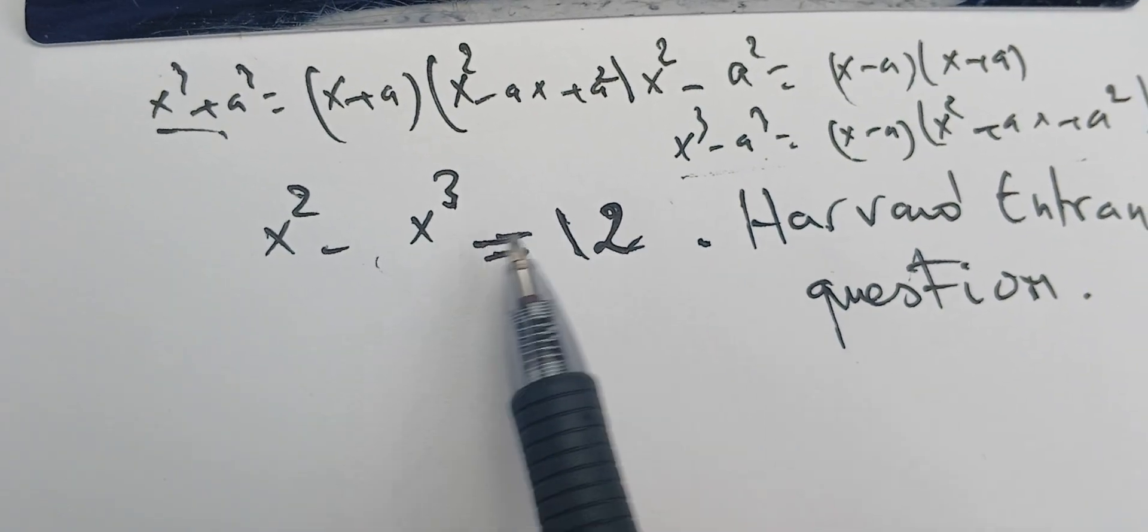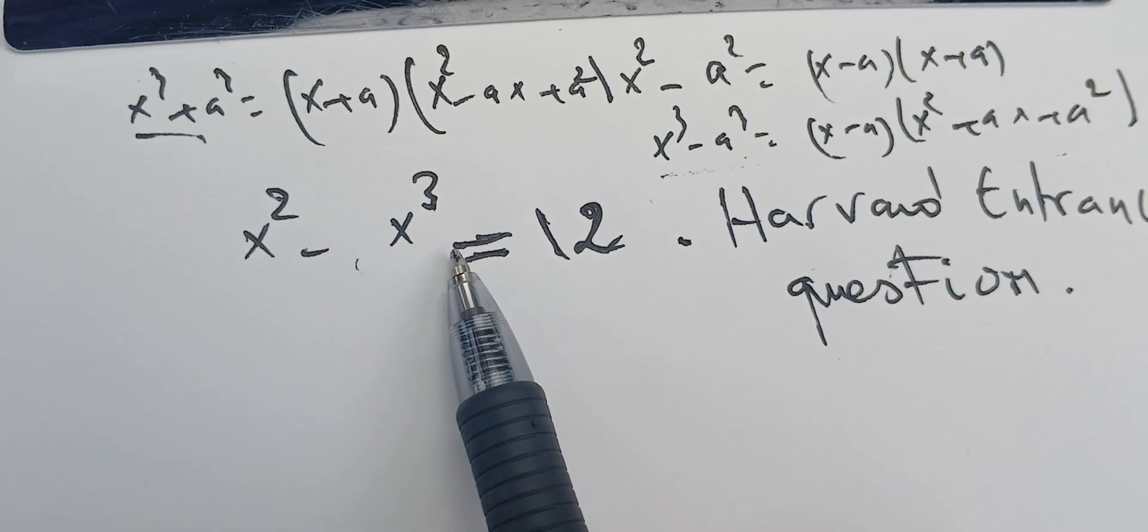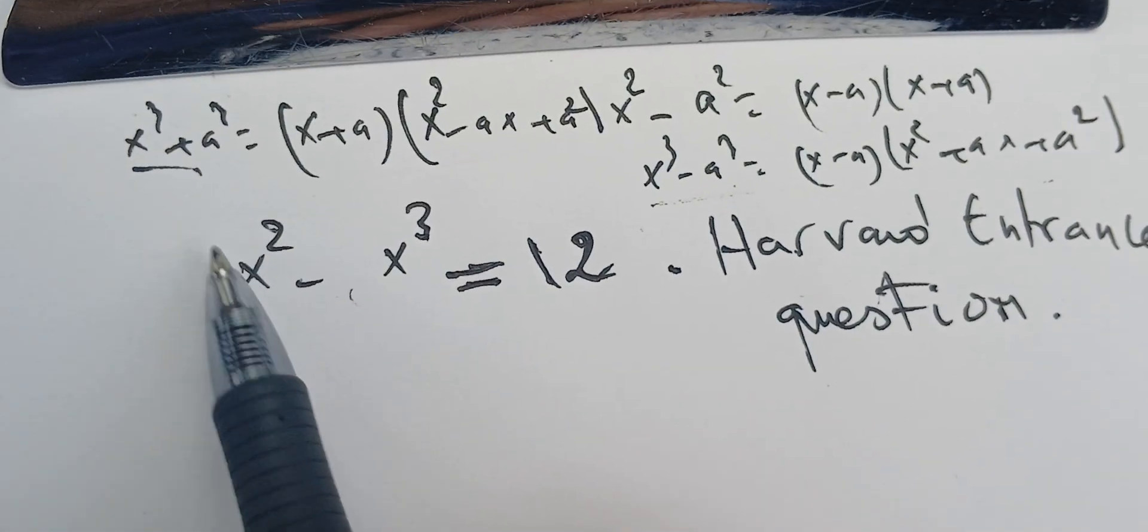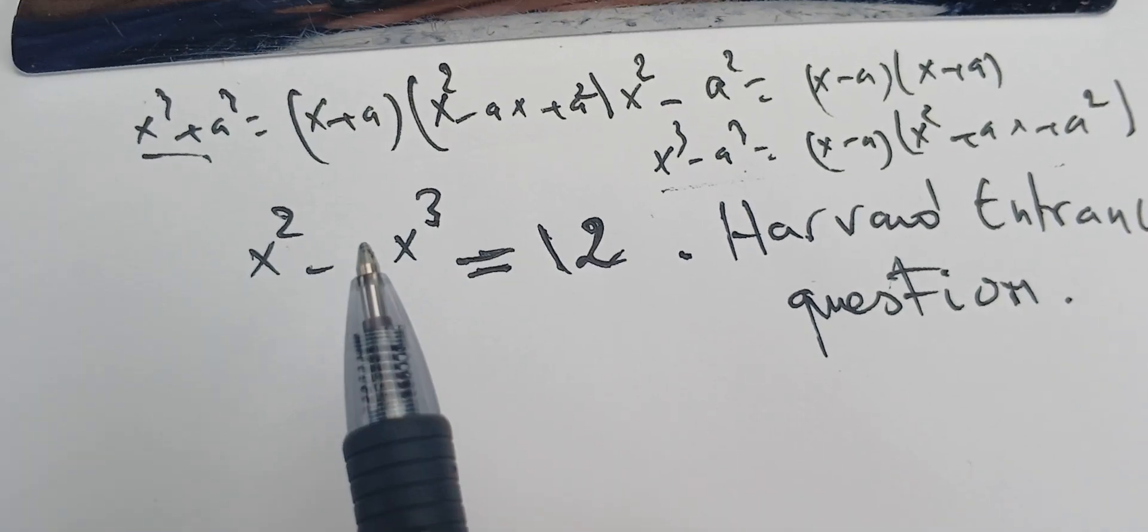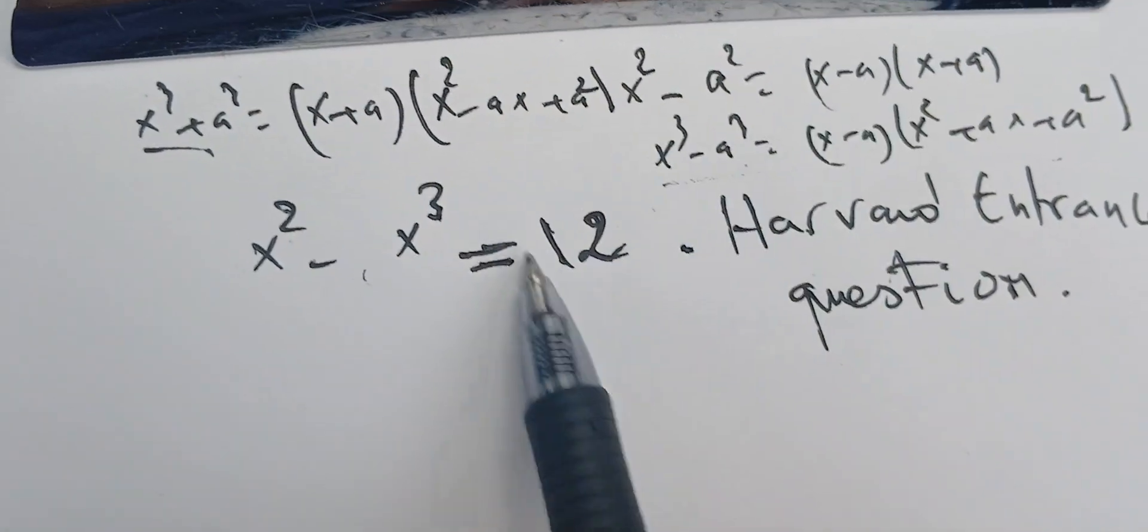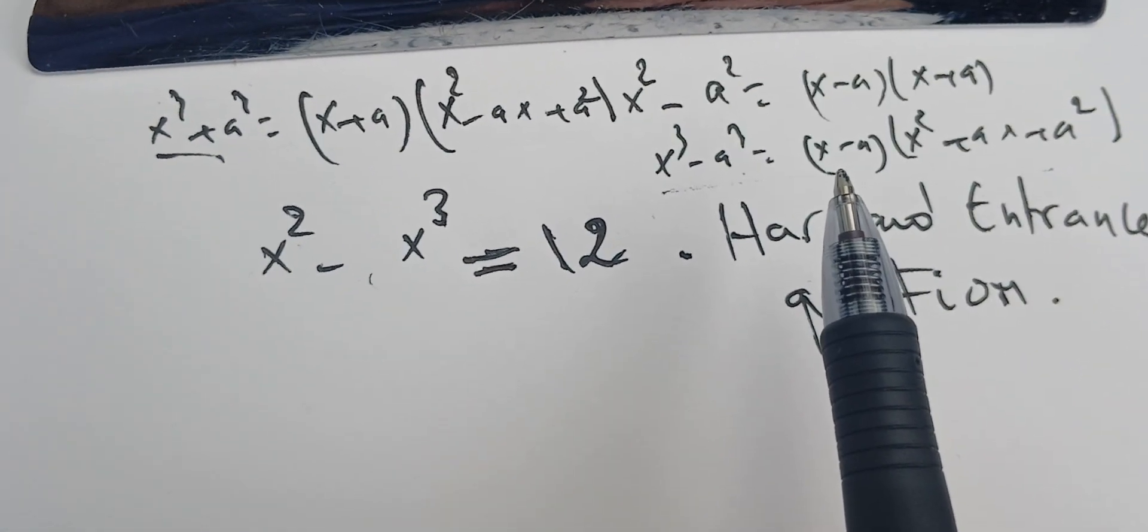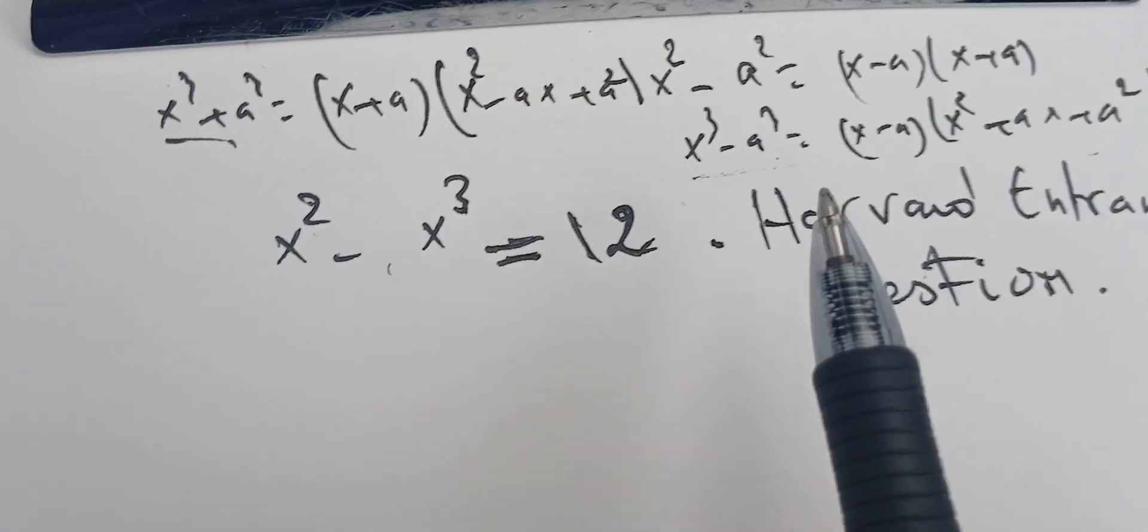But if we plug minus two we see that minus two is a solution, because four plus eight is 12. Trial and error, doing this in your head, can help a lot. Now we're going to decompose this 12 into eight plus four.